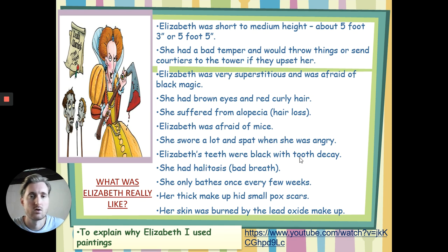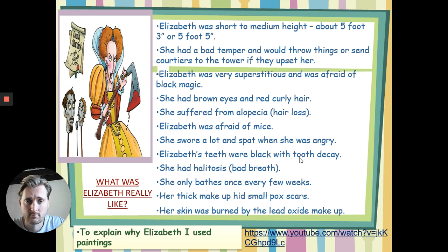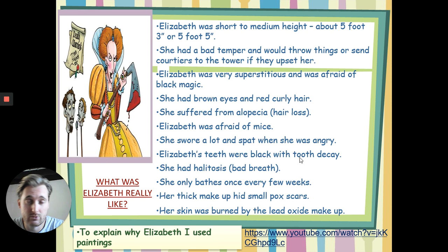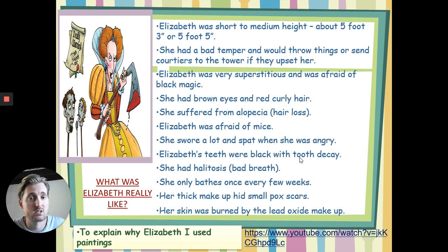She was afraid of mice, and she apparently swore a lot and spat when she was angry. Her teeth were black with tooth decay. Why do you think her teeth would have been black? Her teeth would have been black because of her consumption of sugar. People don't really brush their teeth at this time, but she would have drunk lots of things with sugar, and obviously sugar rots your teeth. So she had a real issue with tooth decay, and because of that — with no toothpaste at this point — she would have had very bad breath. And she only bathed once every few weeks.